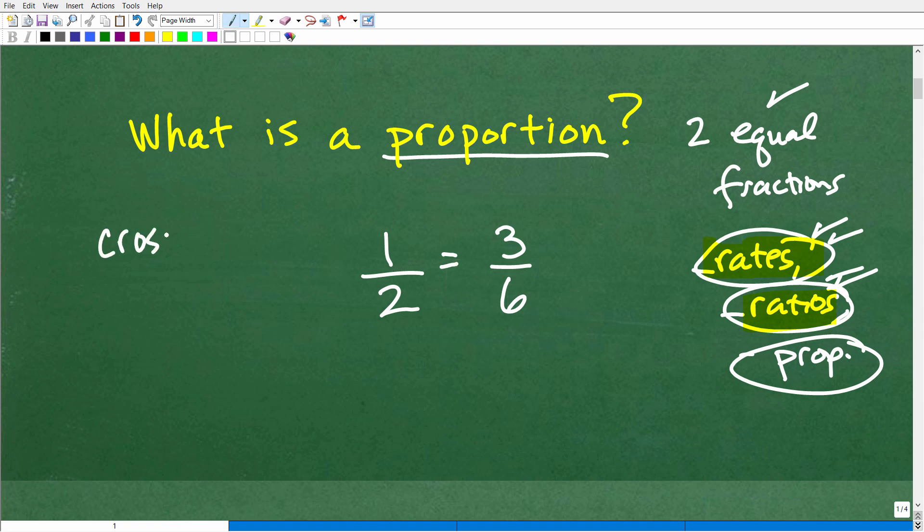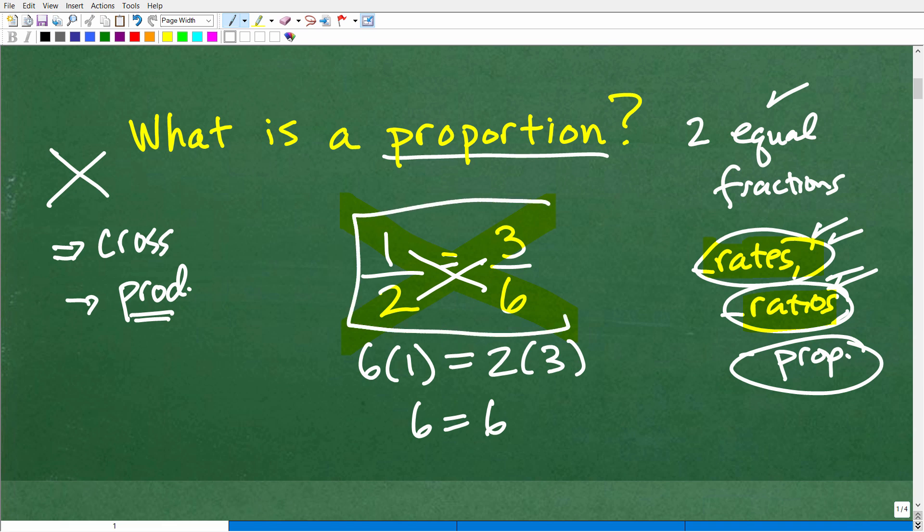So cross and product. Product is multiplication. And cross means you're kind of crisscrossing like this. So if I take the product crosswise like so, let's see what happens. If I have six times one, is that equal to two times three? Well, in fact it is. Six times one is six. Two times three is six. So in a proportion, the cross product is always true. This property will always be true.